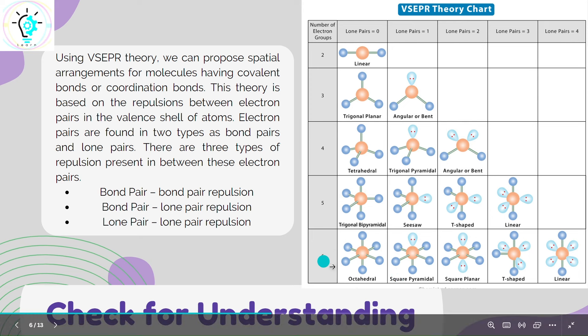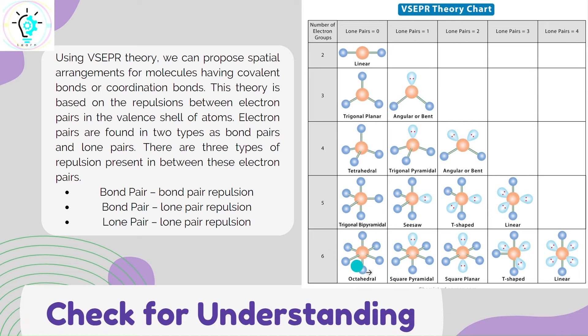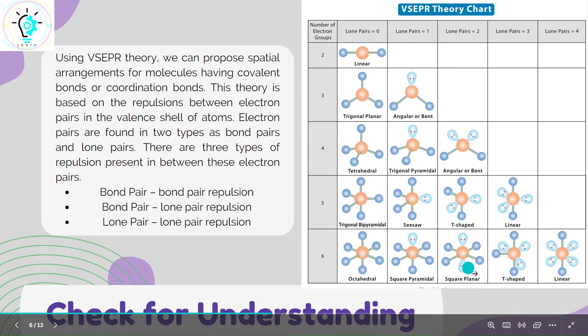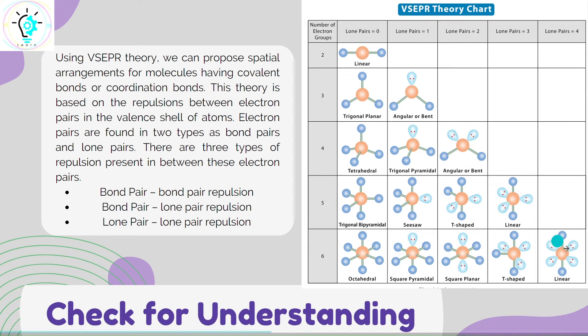Similarly, if the number of electron groups increases further, we go from octahedral to square pyramidal to square planar to T-shaped, and then finally linear, with increasing numbers of lone pairs.